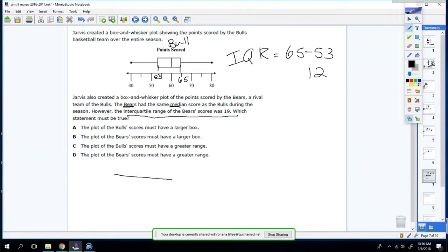So the bigger the IQR, the bigger the box. So the plot of the Bulls' scores must have a larger box. Well, that's not true because the Bears' IQR is bigger. This one says the plot of the Bears' scores must have a larger box. That's true. C and D are false because they're talking about range. We don't have enough information to figure out our range.